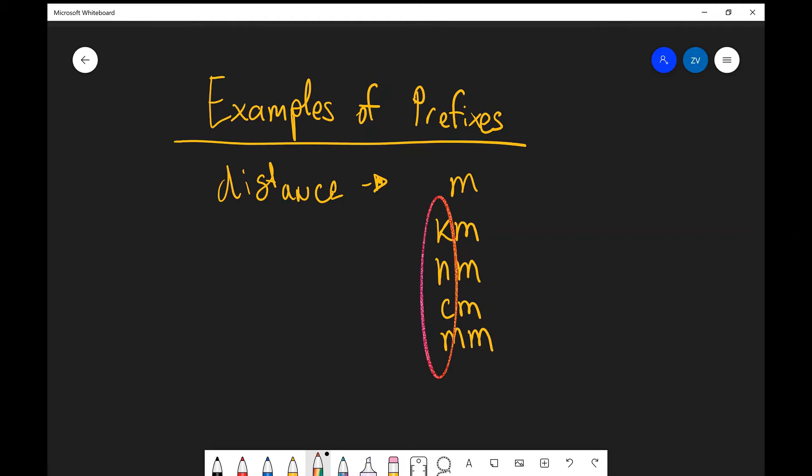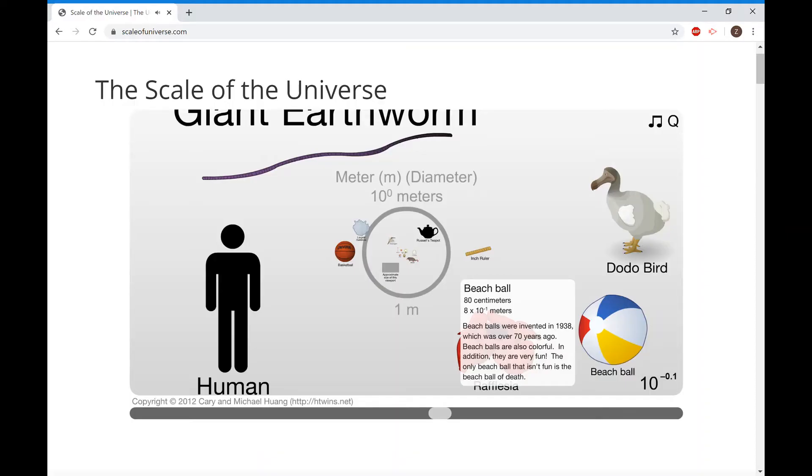But just before we look into that, let's have a look at why are prefixes so important. Why are they some of the fundamentals of science and the fundamentals of physics in particular? Physics studies both the incredibly large and the incredibly small. I found this brilliant visualization called the scale of the universe. You can find it on scaleoftheuniverse.com and you can play around with it. Let's have a look.